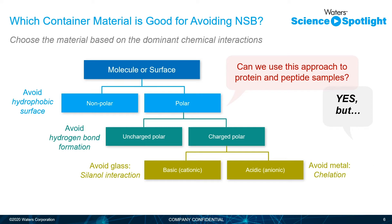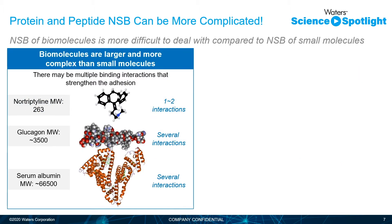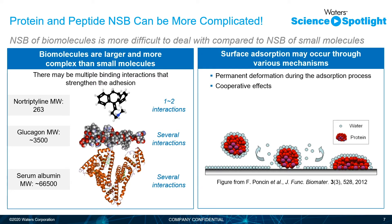But can we use this approach for protein and peptide samples? Yes, but it's a little bit complex. Nonspecific binding of proteins and peptides can be quite complicated — much more difficult than for small molecules. For example, nortriptyline with a molecular weight of 263 may only have one to two interactions. Glucagon at 3,500 may have several types of interactions. And something as large as serum albumin at 66,000 can have lots of interactions, surface absorption through various mechanisms, permanent deformation, and cooperative effects.